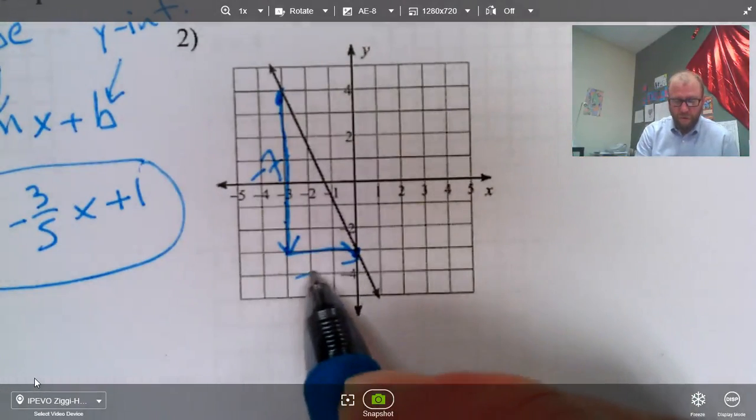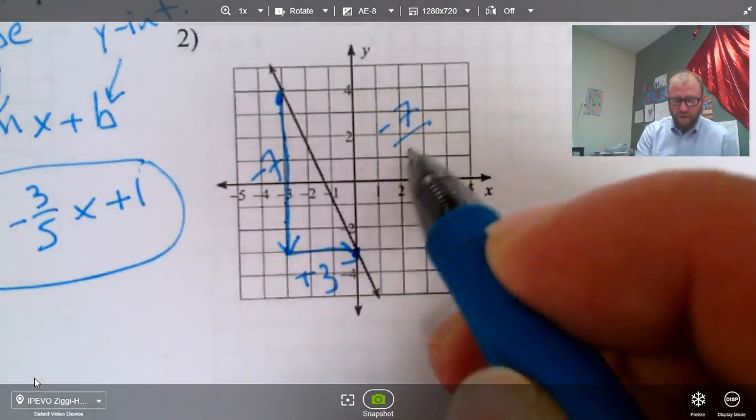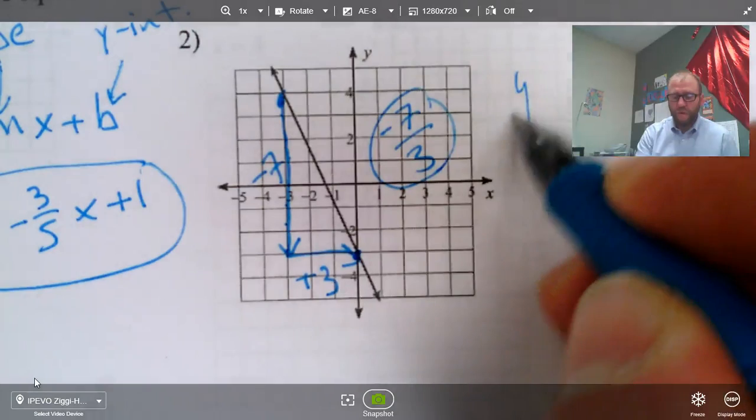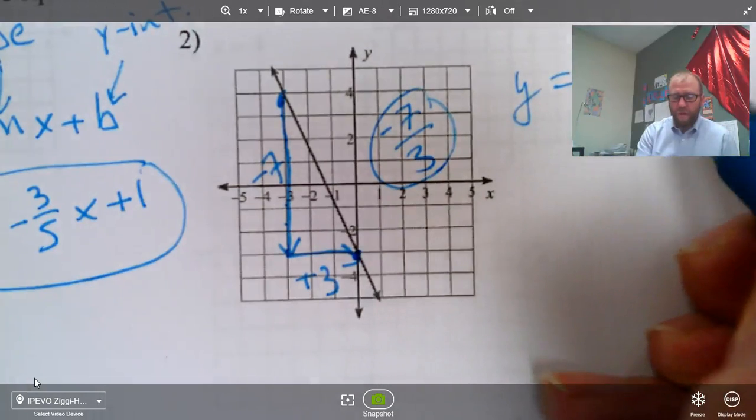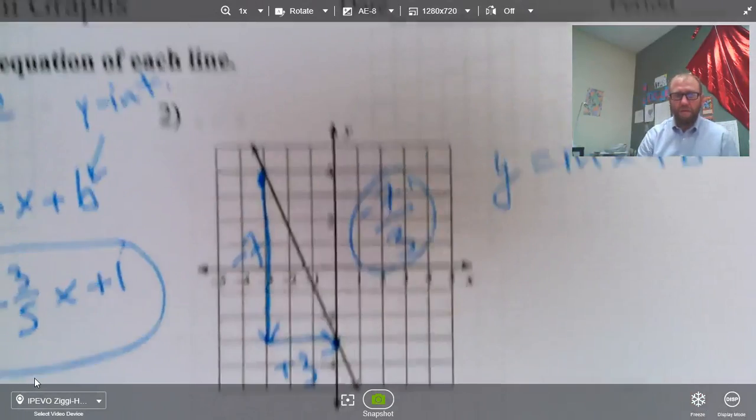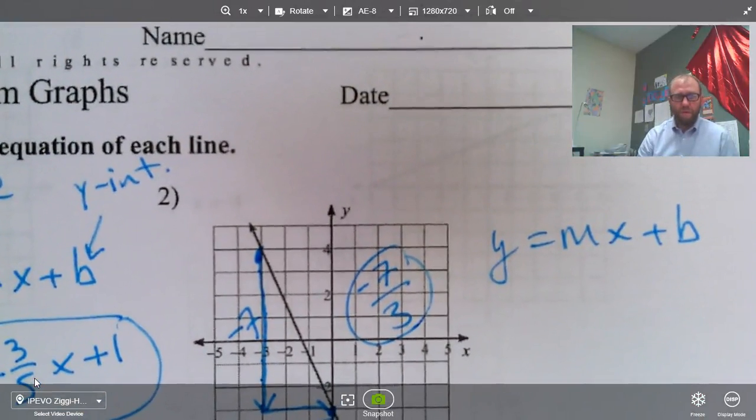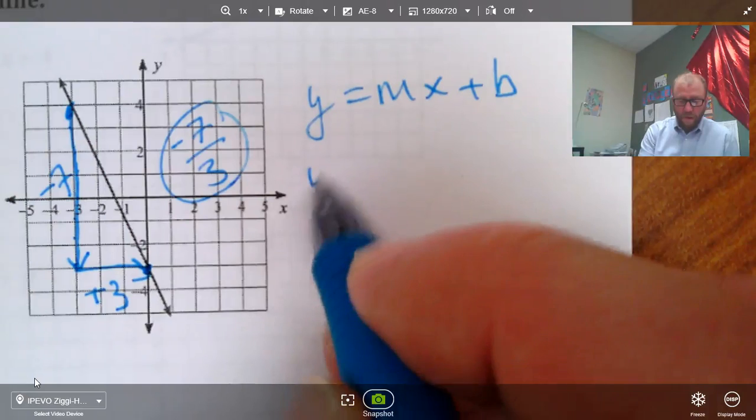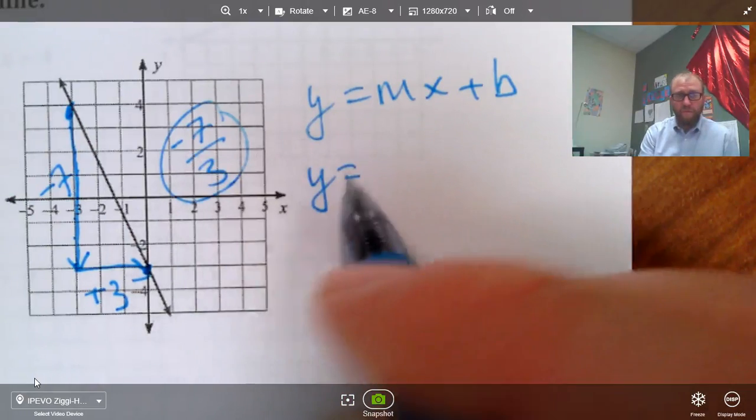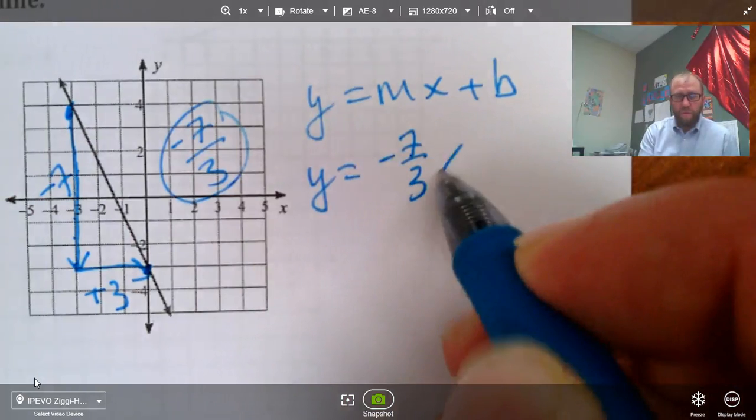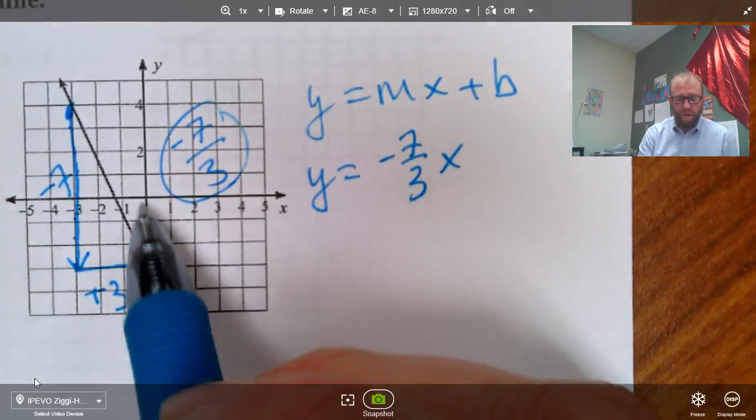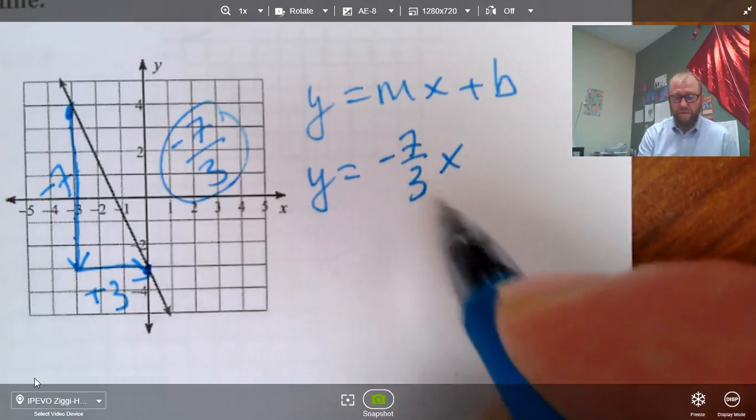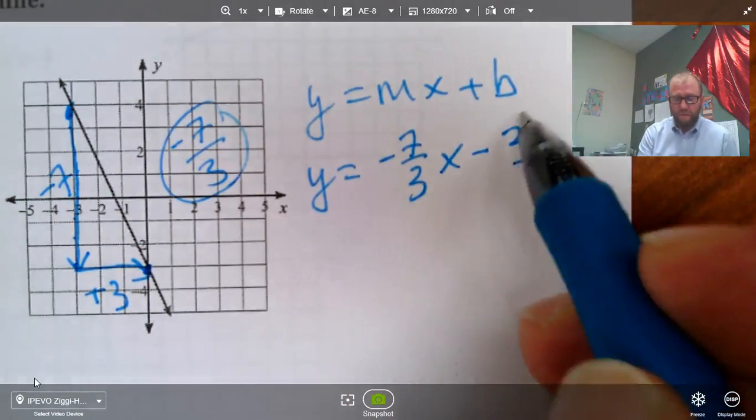So rise over run, that's negative seven over three. So y equals mx plus b, we have y equals, our slope is negative seven-thirds x, and our y-intercept is one, two, three down on the y-axis, so negative three, minus three.